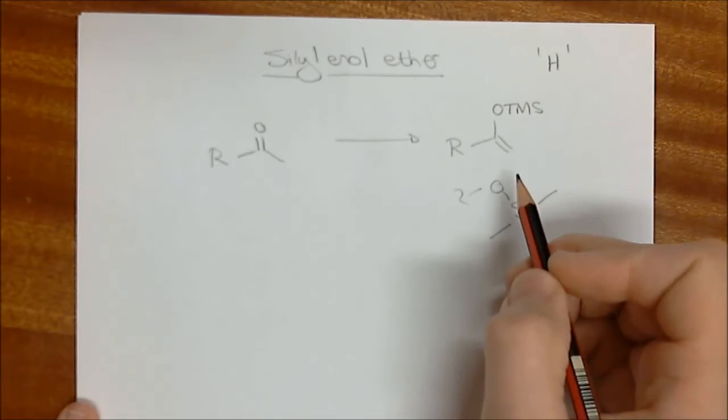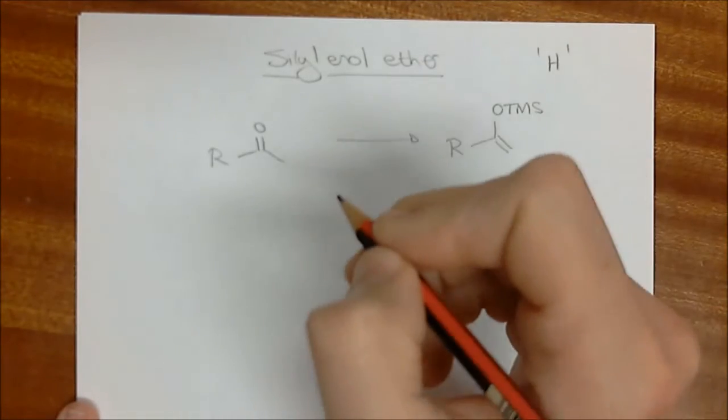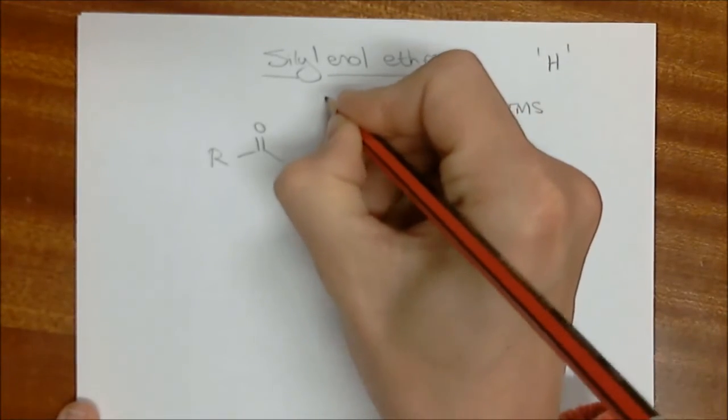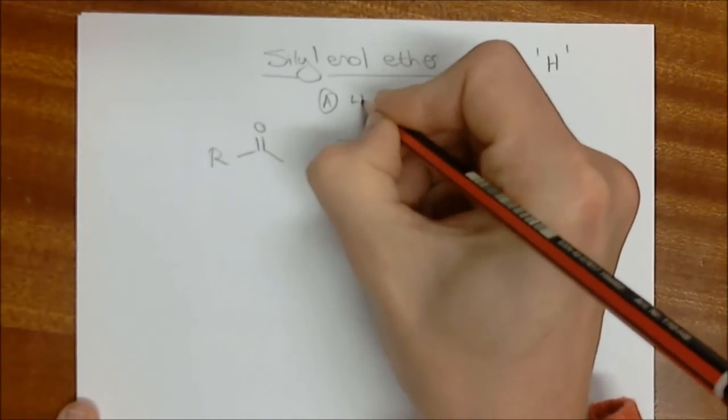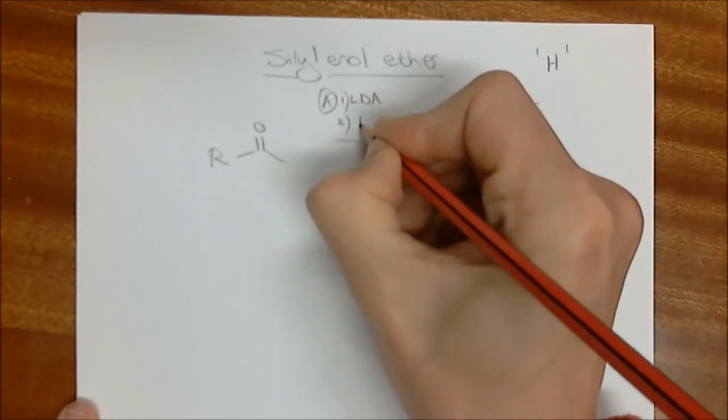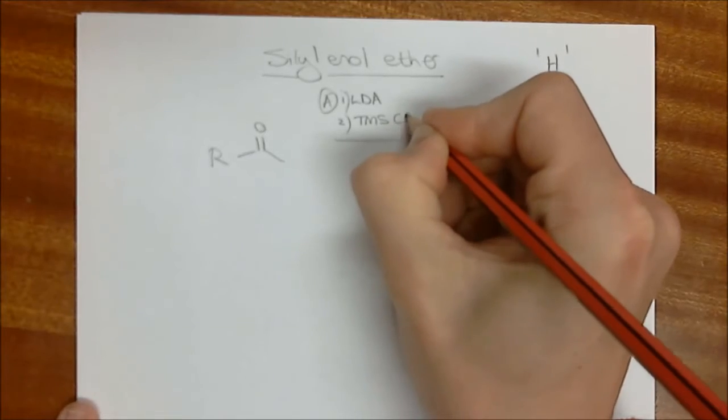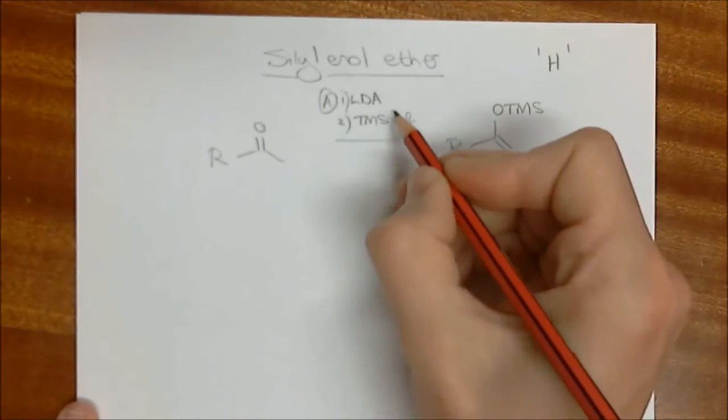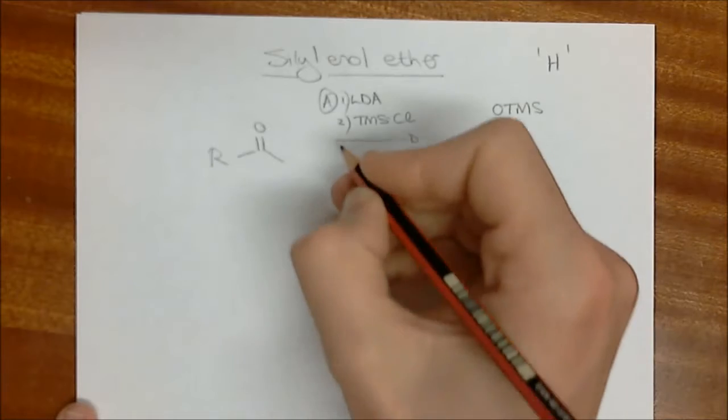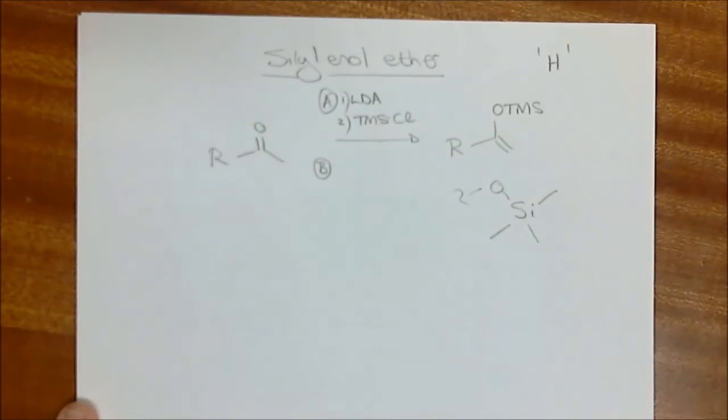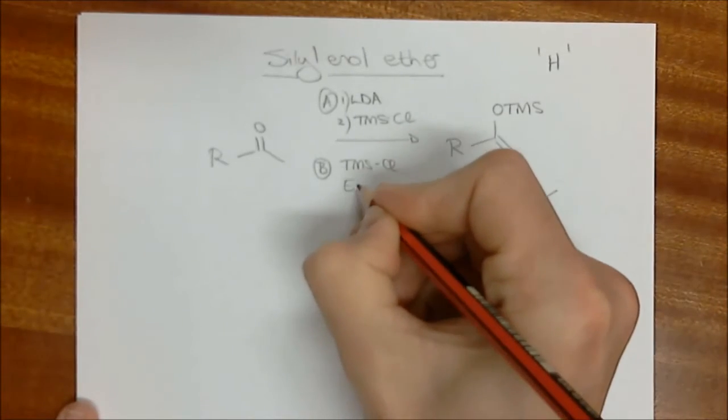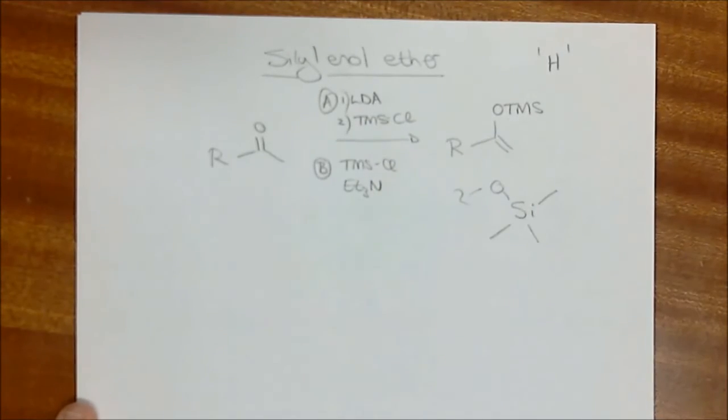How do we make TMS silyl enol ethers? Well, there are a couple of ways. The one way is to actually - we call this option A - make the enolate using LDA, using one equivalent of LDA, and then part two is to add TMS chloride, which of course will just be trimethyl silyl chloride. It's a good leaving group, and so we form the enolate and we put the TMS group on there. Go and practice doing the mechanism for that. You should be able to do that now.